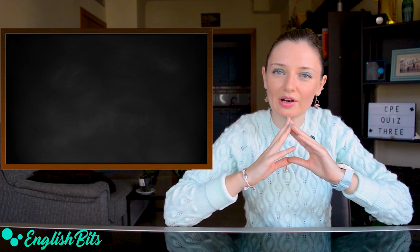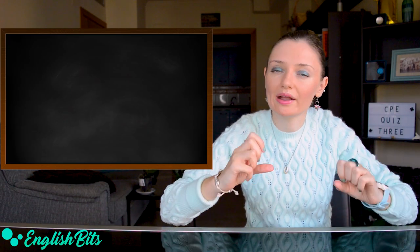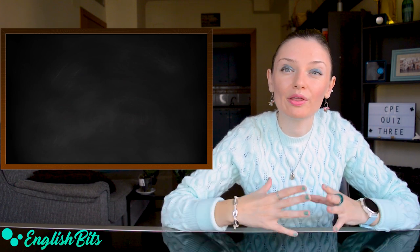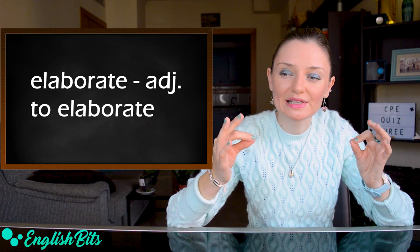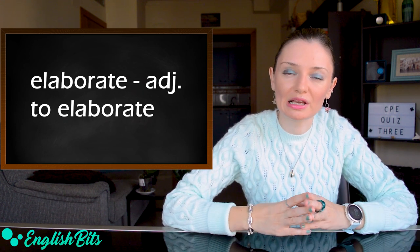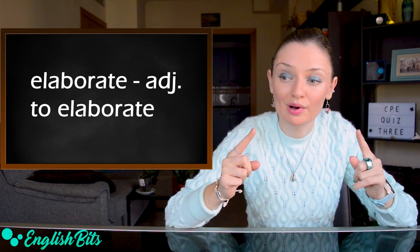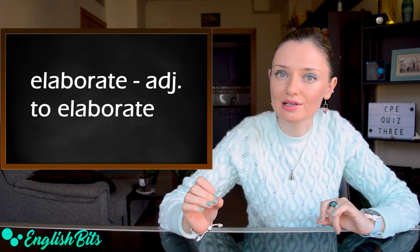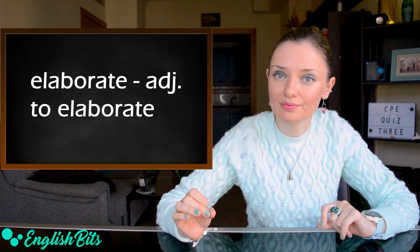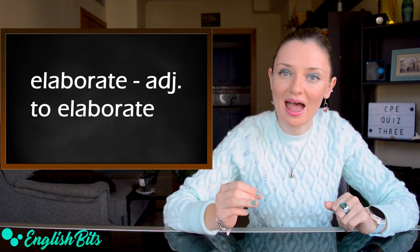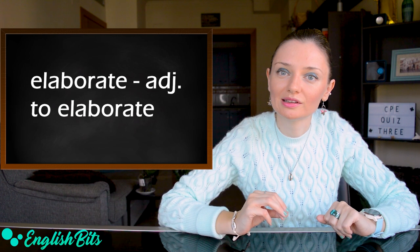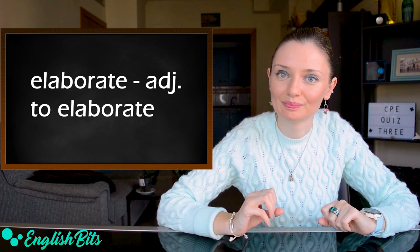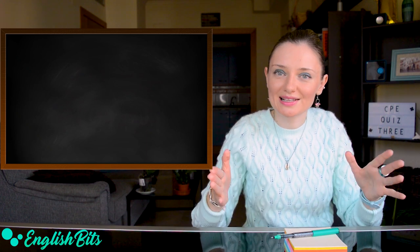Before we start, I'd like to correct one pronunciation mistake I made in the previous video. It has to do with elaborate. If it's an adjective, the pronunciation is elaborate. But if it's a verb, it's to elaborate. So it's quite tricky. Remember, adjective elaborate, but the verb would be to elaborate. So with that being said, let's get down to business.